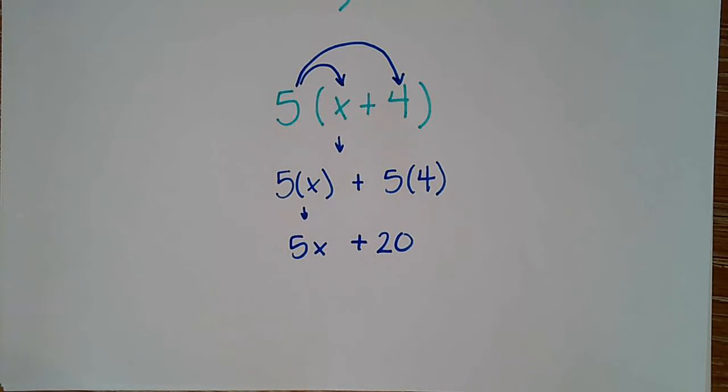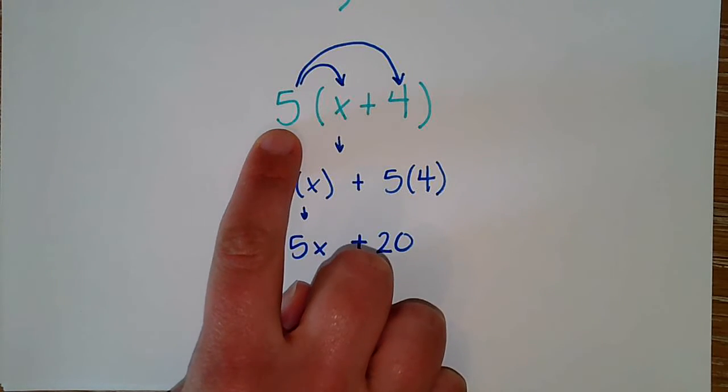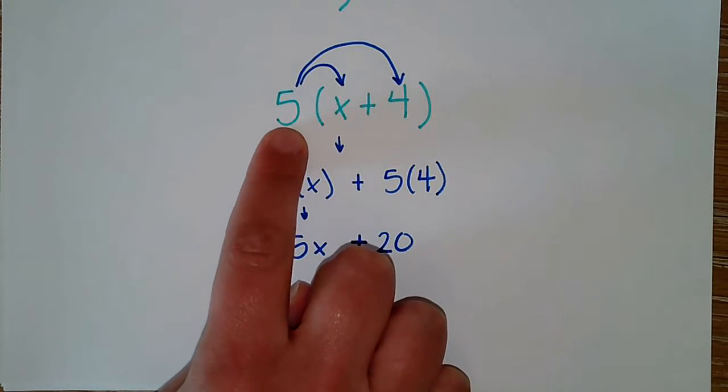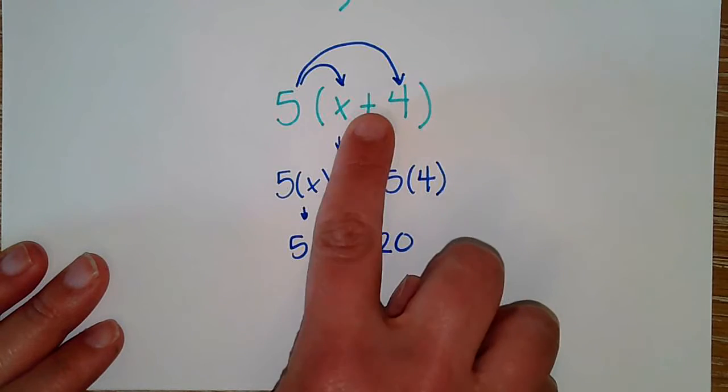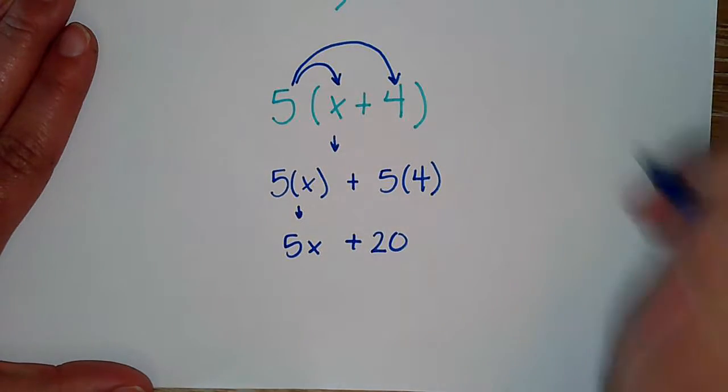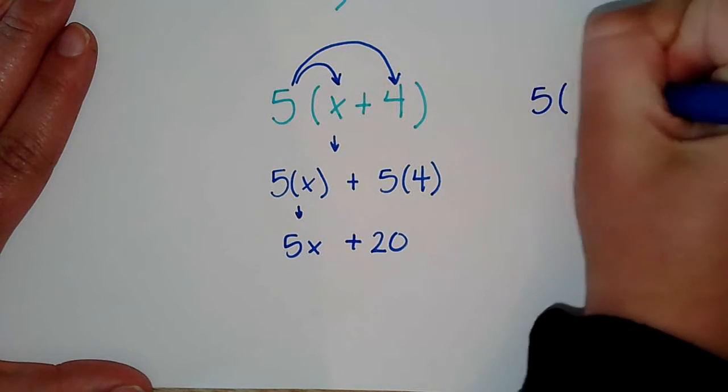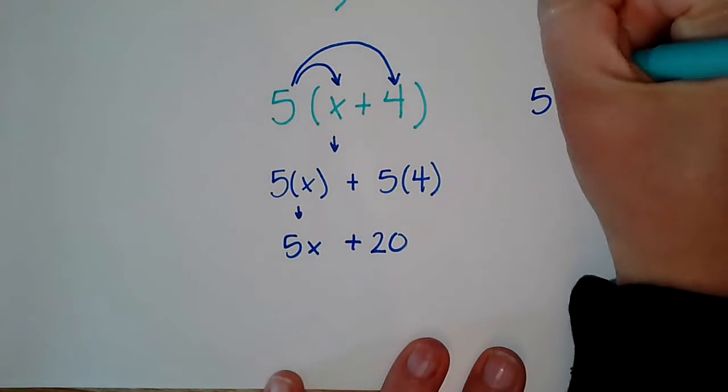The distributive property tells me I can take an outside factor, a number outside parentheses being multiplied to the parentheses, and distribute it to each part. This works with both addition inside or subtraction. It will not work with multiplication or division.